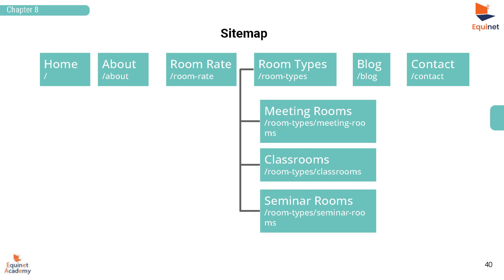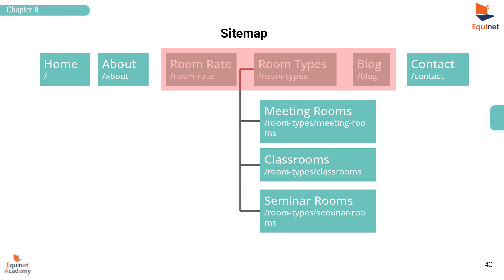In the sitemap, you need to list out all the different sections and pages of your website and map it out. For each page, you will also need to think of the URL. In the URL, besides your domain name, there will always be a path. This usually contains the focus of the biggest keywords of the page.